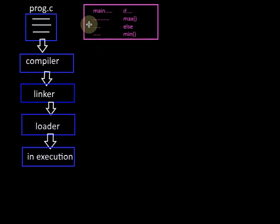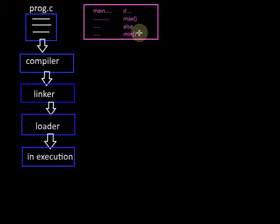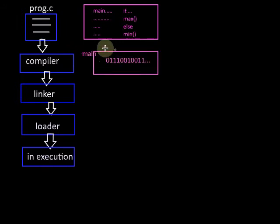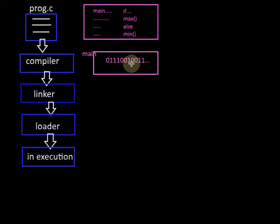For example, suppose we have a program with a main function and within it there is an if statement. If the condition is true, the max function has to be executed; otherwise the min function has to be executed. Assume that both the functions max and min are not defined within the same program — they are defined in some other program written by the same user. The compiler will compile it and generate the object code, in which there are two symbols, max and min, whose definitions are not provided within the same object code.